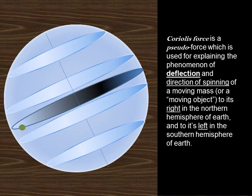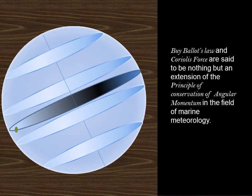Coriolis force is a pseudo-force which is used for explaining the phenomenon of deflection and direction of spinning of a moving mass, or a moving object, to its right in the northern hemisphere of Earth and to its left in the southern hemisphere of Earth. Buy-Ballot's law and Coriolis force are said to be nothing but an extension of the principle of conservation of angular momentum in the field of marine meteorology.